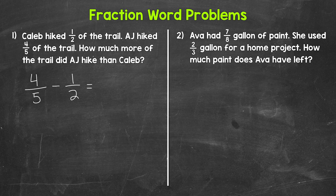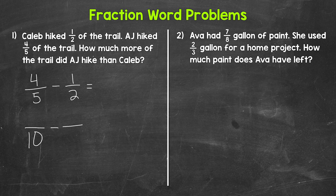Now, we do not have a common denominator here, so we can't subtract quite yet. We need to find a common denominator for five and two, and then we can subtract. Ten is going to be our lowest common denominator between five and two. So let's rename these with that common denominator of ten. Keep in mind, these are going to be equivalent fractions once we rename them, so we're not changing the value of our original fractions.